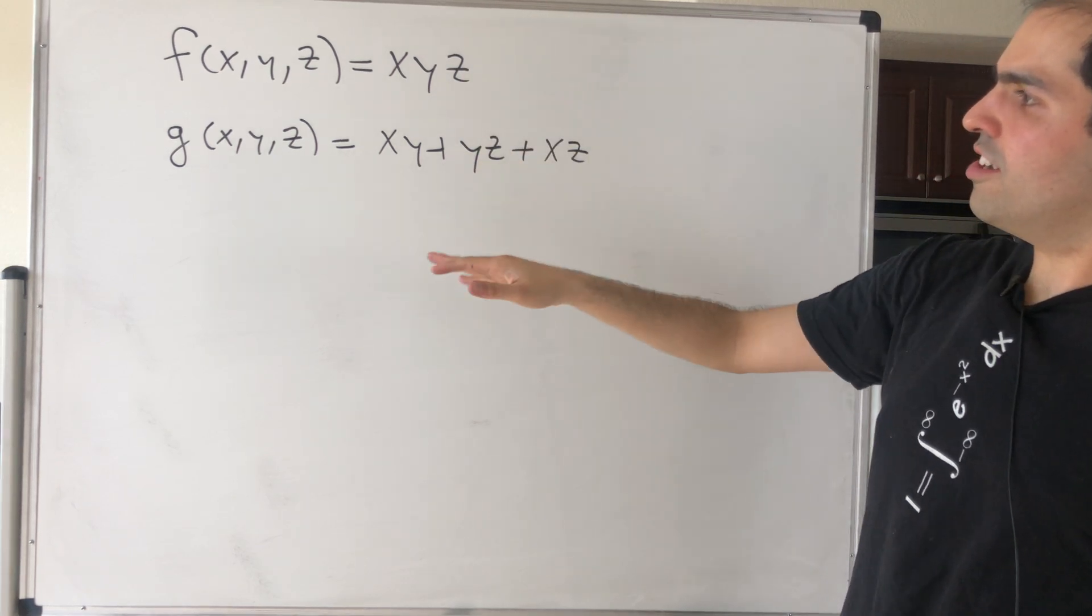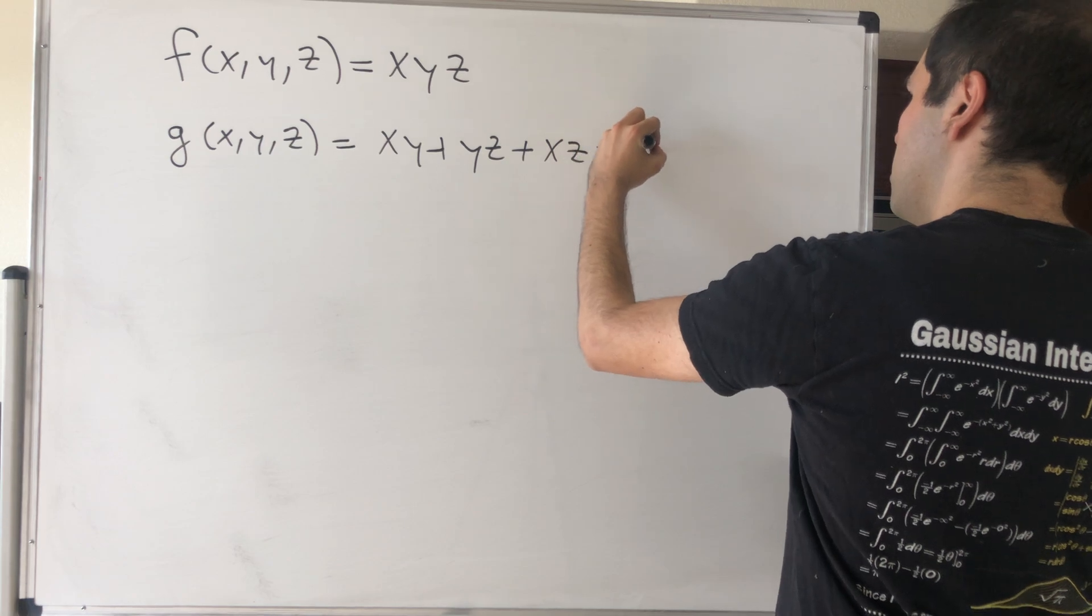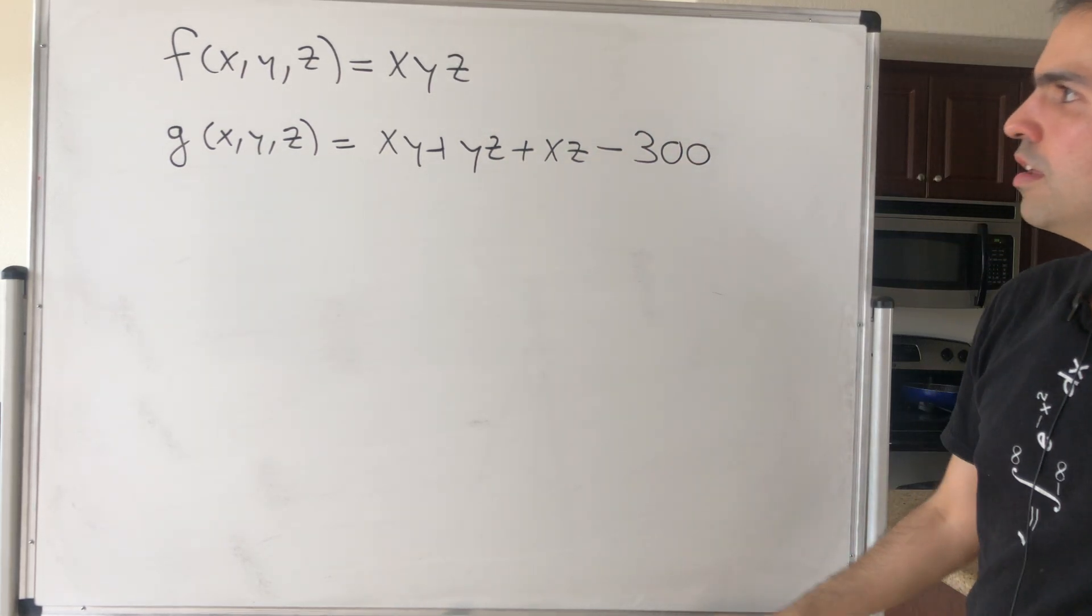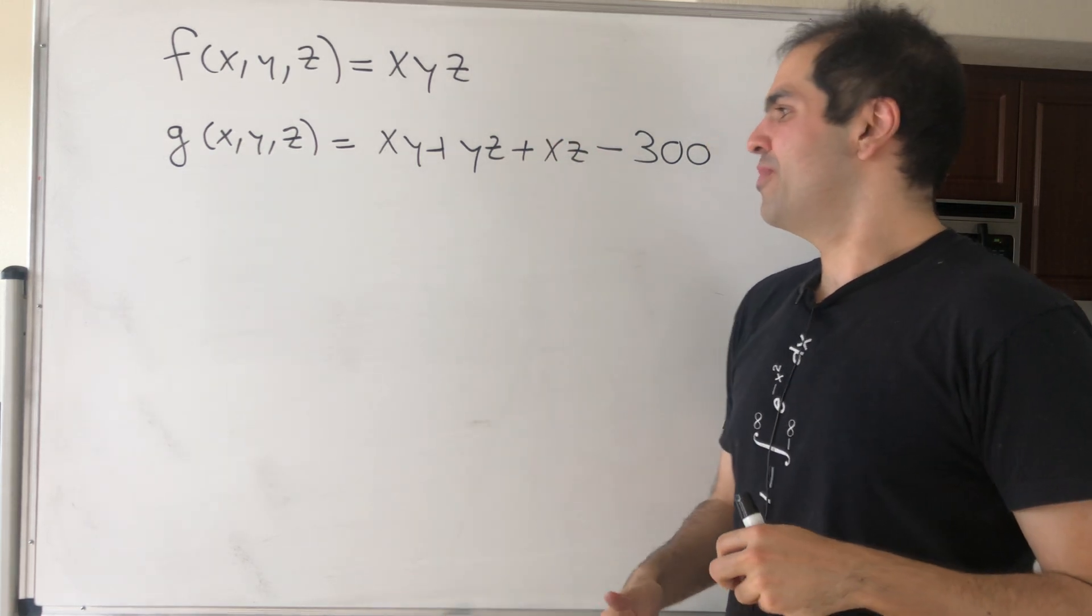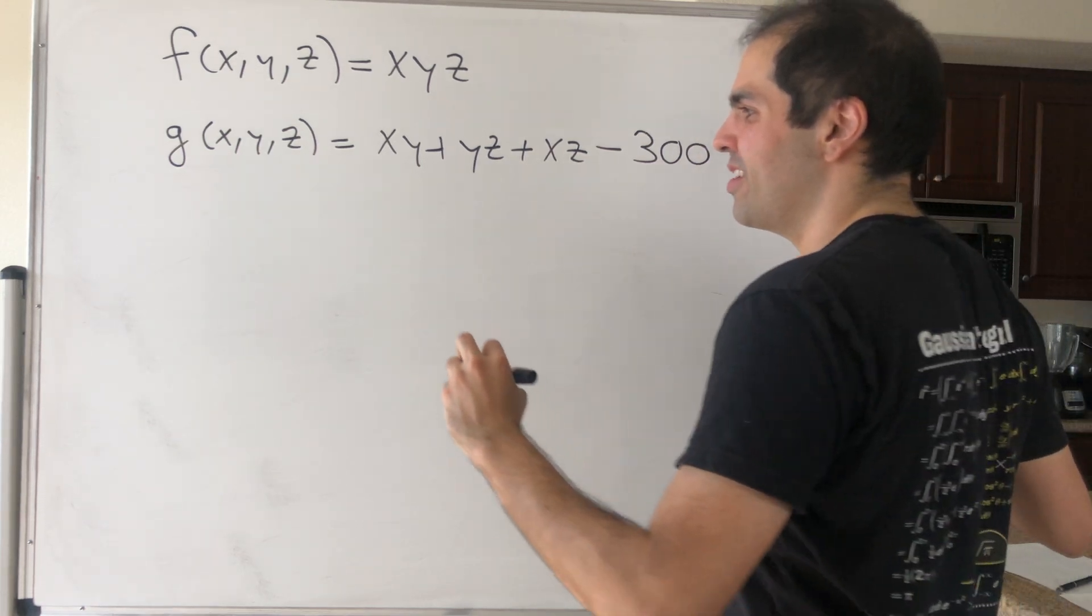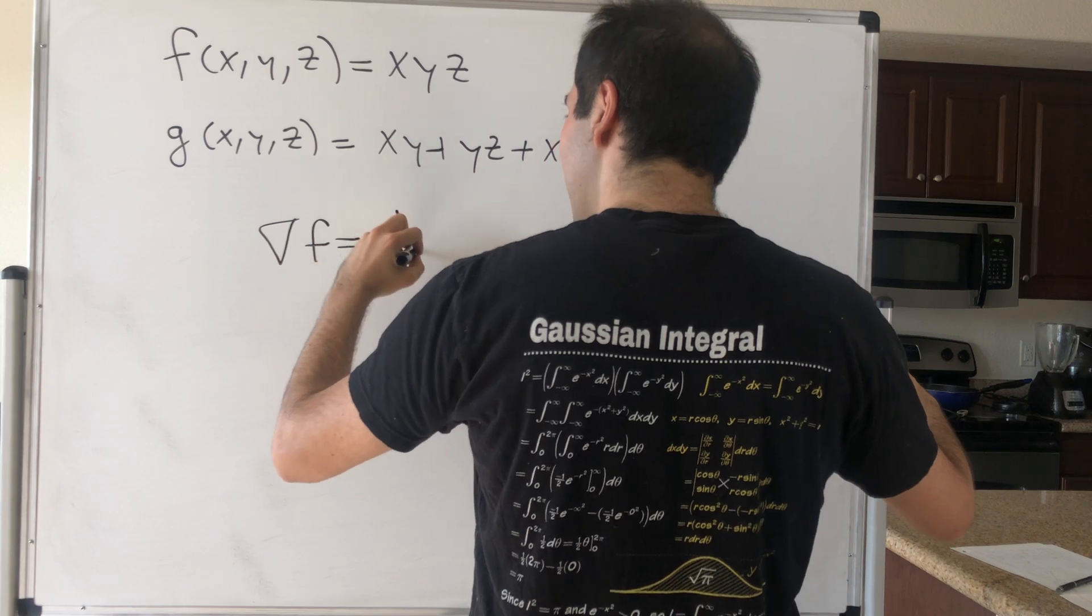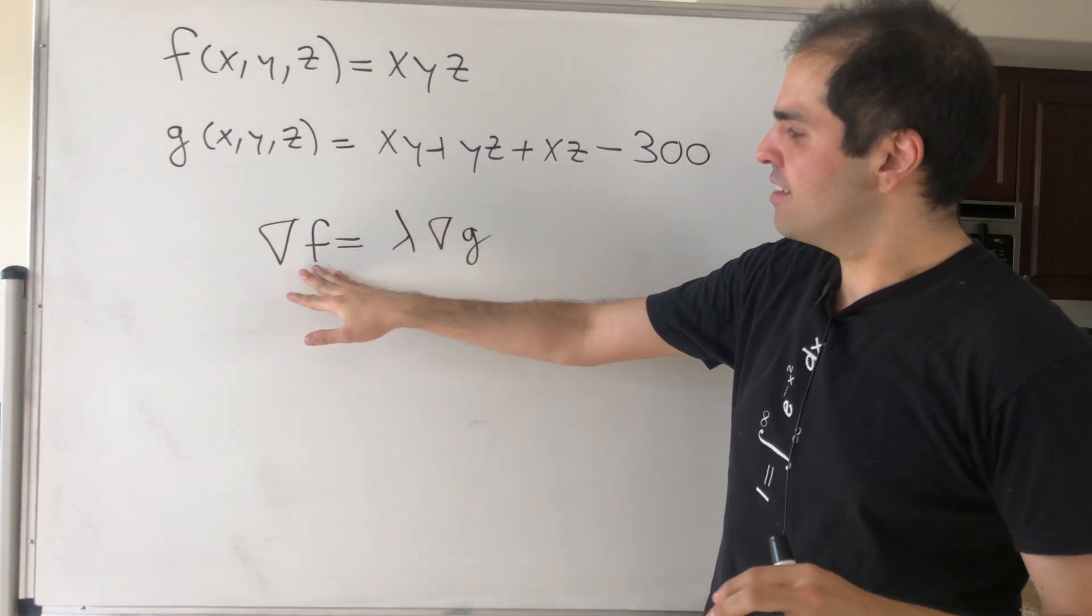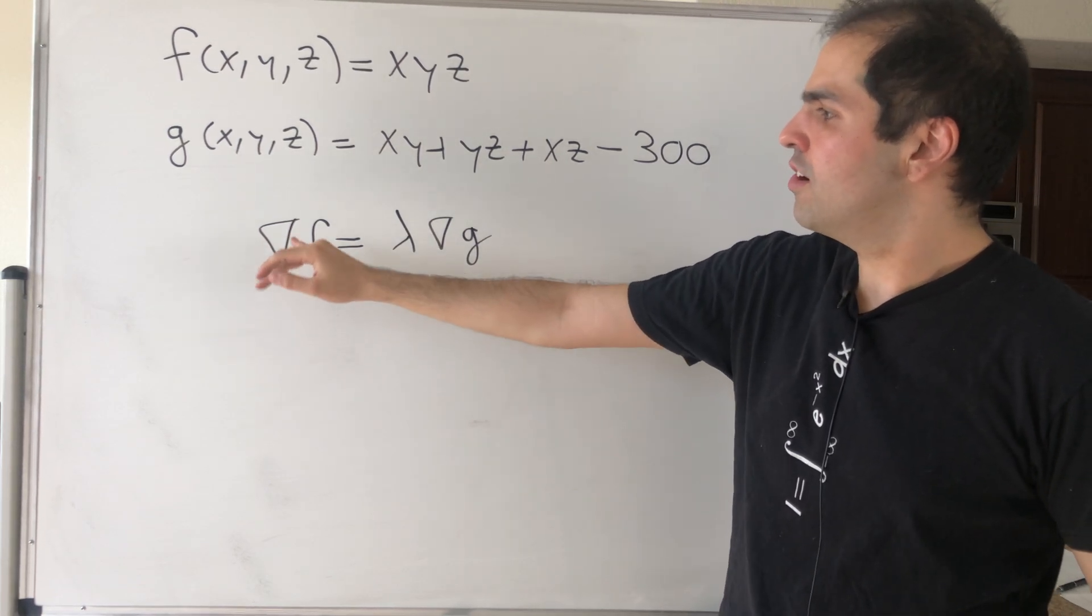This is the function and this is the constraint. Now remember, for Lagrange multipliers, the most important equation is that the gradient of F is parallel to the gradient of G. At the maximum, those two gradients are parallel, which means this gradient is a multiple of this gradient, and this value lambda is called the Lagrange multiplier.